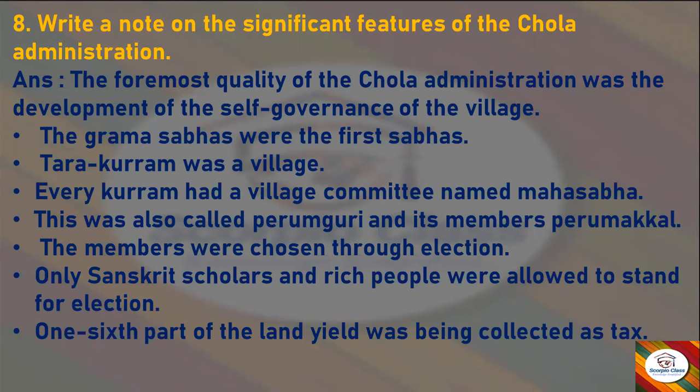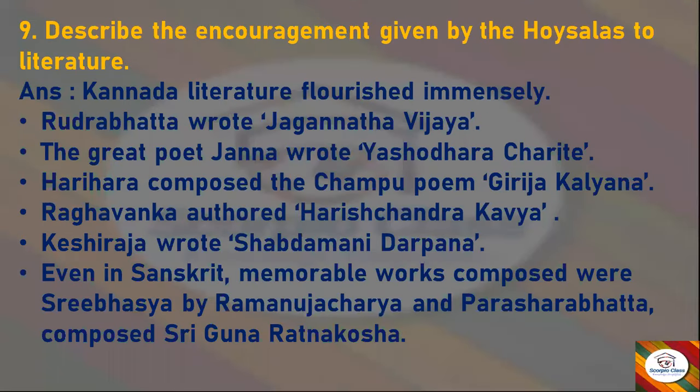Answer: the foremost quality of the Chola administration was the development of self-governance of the village. The Grama Sabhas were the first sabhas. Each Kurram was a village; every Kurram had a village committee named Mahasabha, also called Perumuguri, and its members were called Perumakkal. Members were chosen through election. Only Sanskrit scholars and rich people were allowed to stand for election. One-sixth part of the land yield was collected as tax. These were the administrative features of the Chola kingdom.